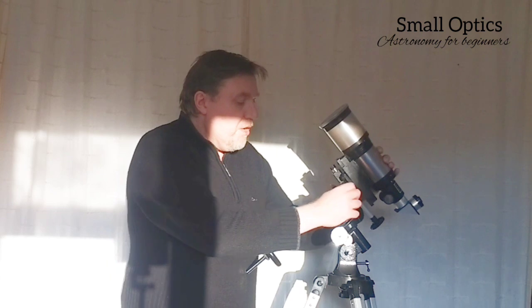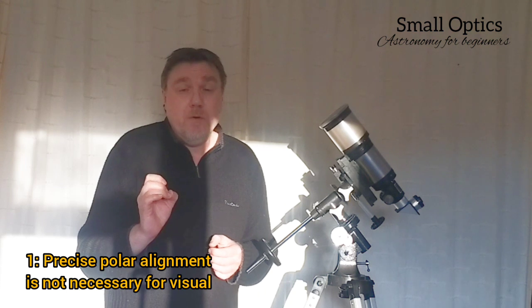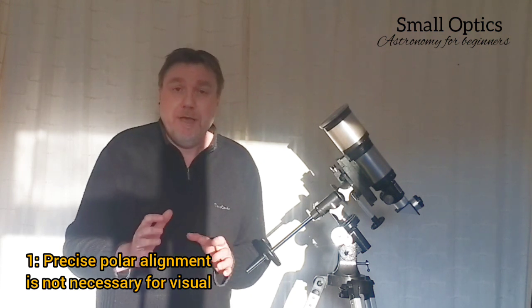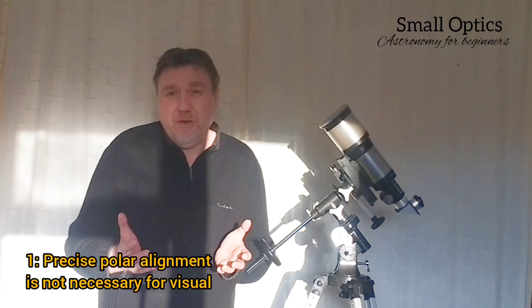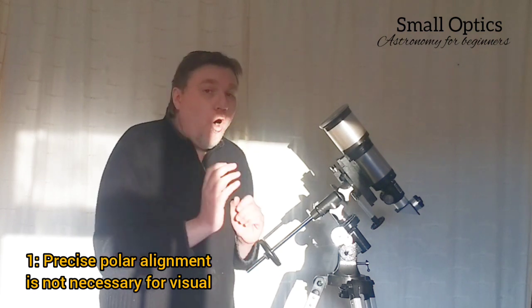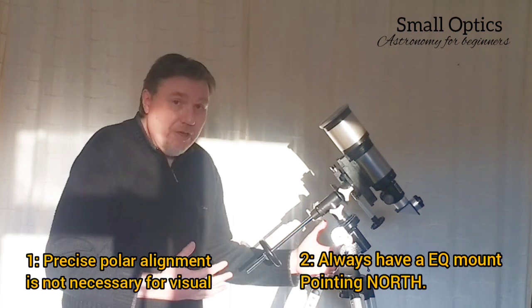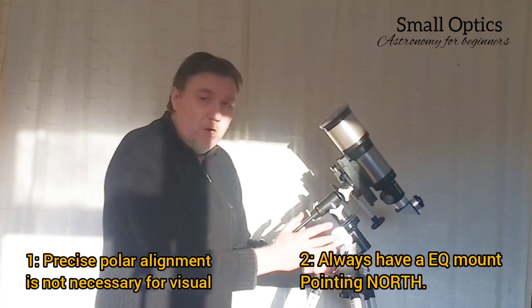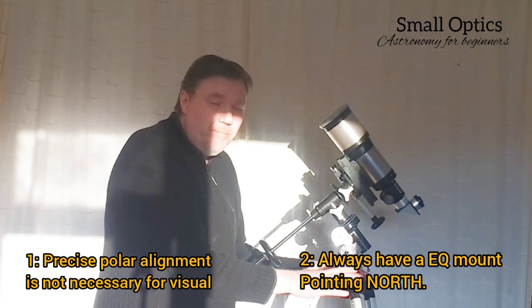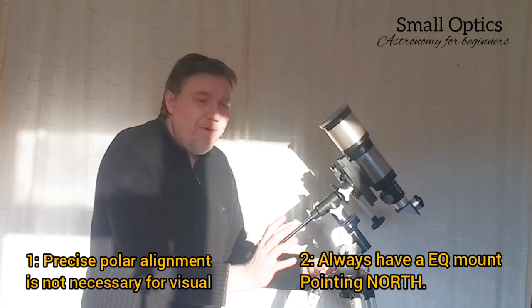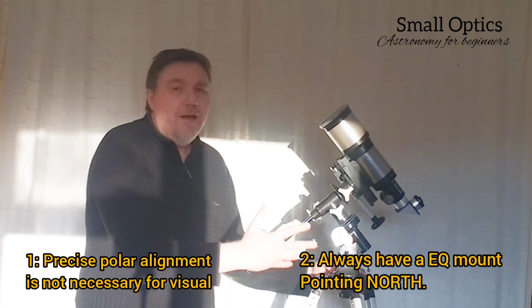Just to go over the main points of why I've made this video: one, you don't have to precisely polar align for visual astronomy—it's only important if you're going to be doing astrophotography. And two, always make sure that the mount is pointing north, not the telescope as such. The mount—that's your starting point always. When you take it out, never just plonk it down and expect it to work, because it just won't.